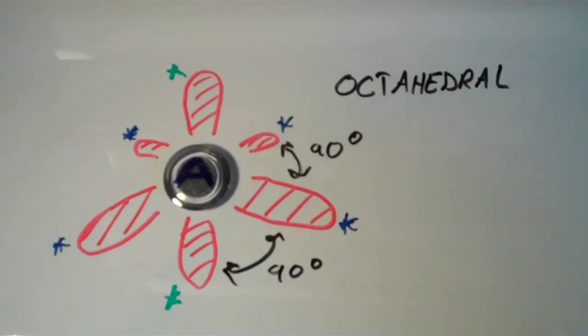So that does it for the five basic shapes. In the next video, I'm going to start talking about the effect of lone pairs and how lone pairs affect the geometry, the overall molecular geometry, of any given molecule. So keep an eye out for that, and alright.